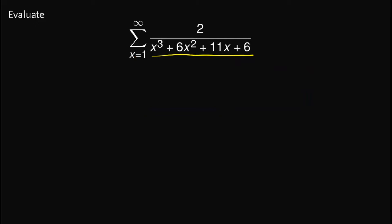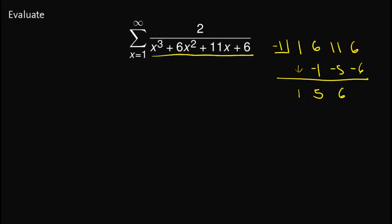So we divide out x plus 1 by applying synthetic division. Applying synthetic division with coefficients 1, 6, 11, and 6: bring down the 1; 1 times negative 1 is negative 1, giving 5; 5 times negative 1 is negative 5, giving 6; 6 times negative 1 is negative 6. This implies the expression factors into x plus 1 times x squared plus 5x plus 6, and we can factor that further into x plus 3 and x plus 2.